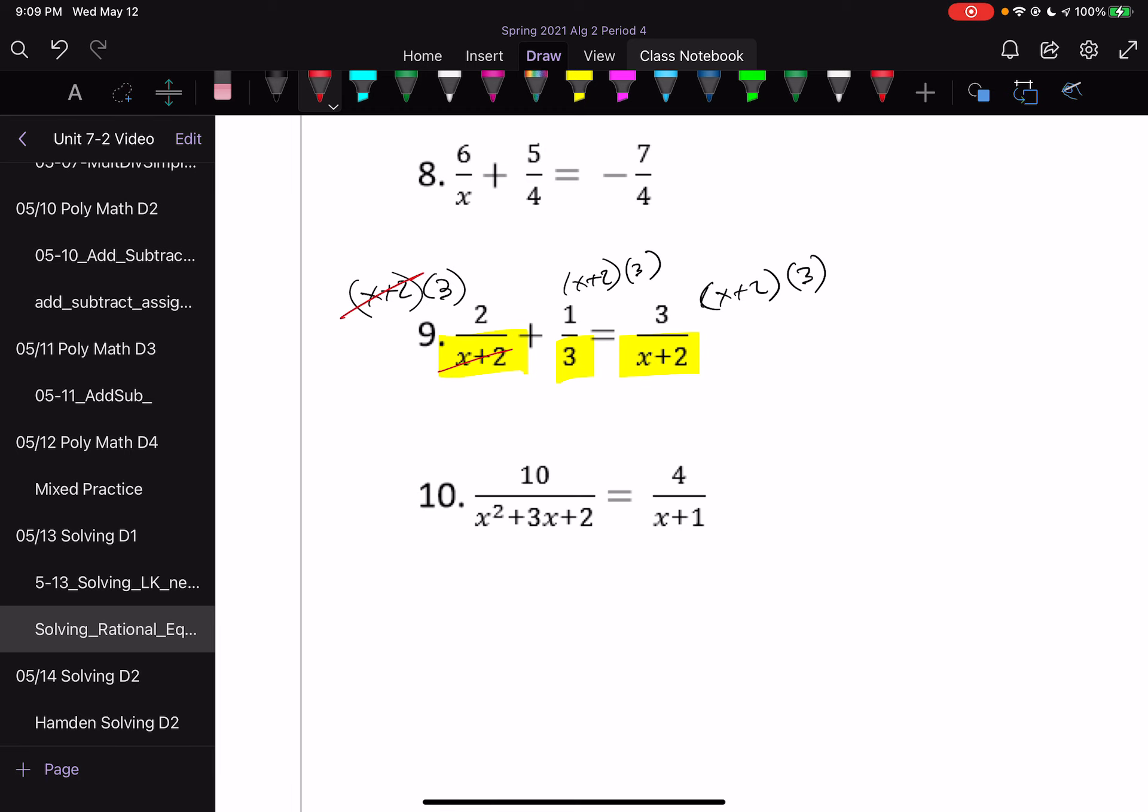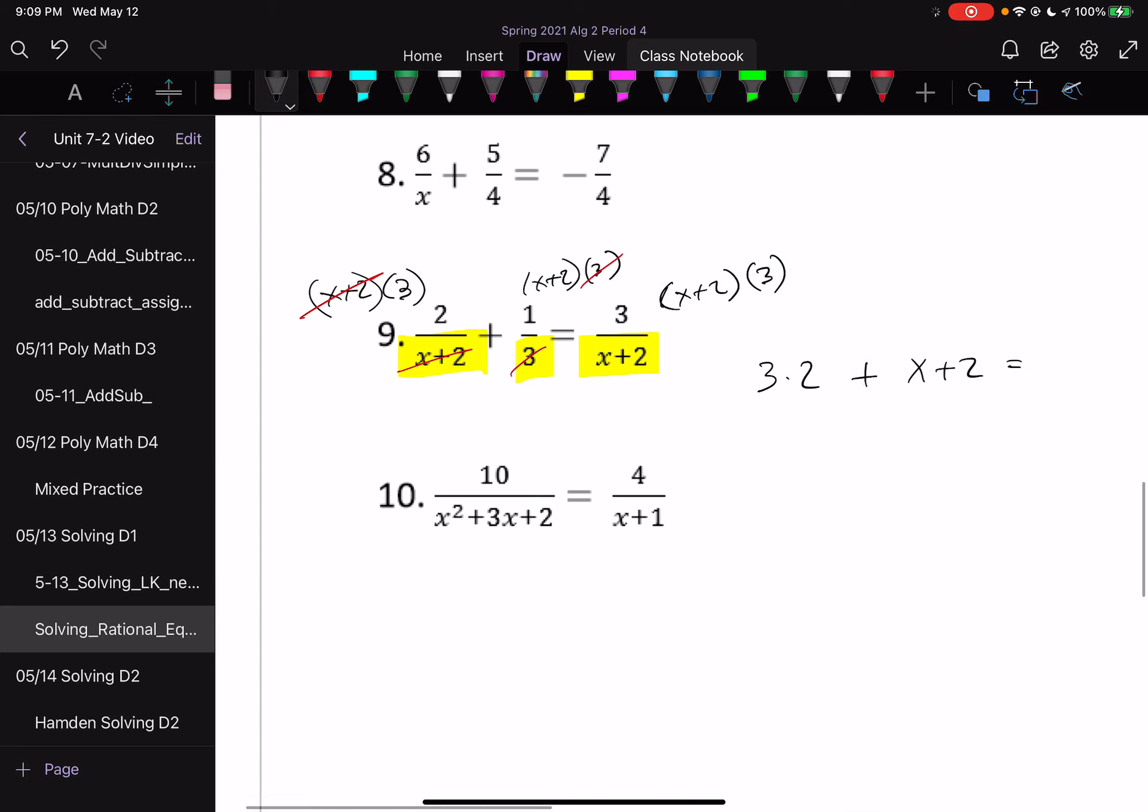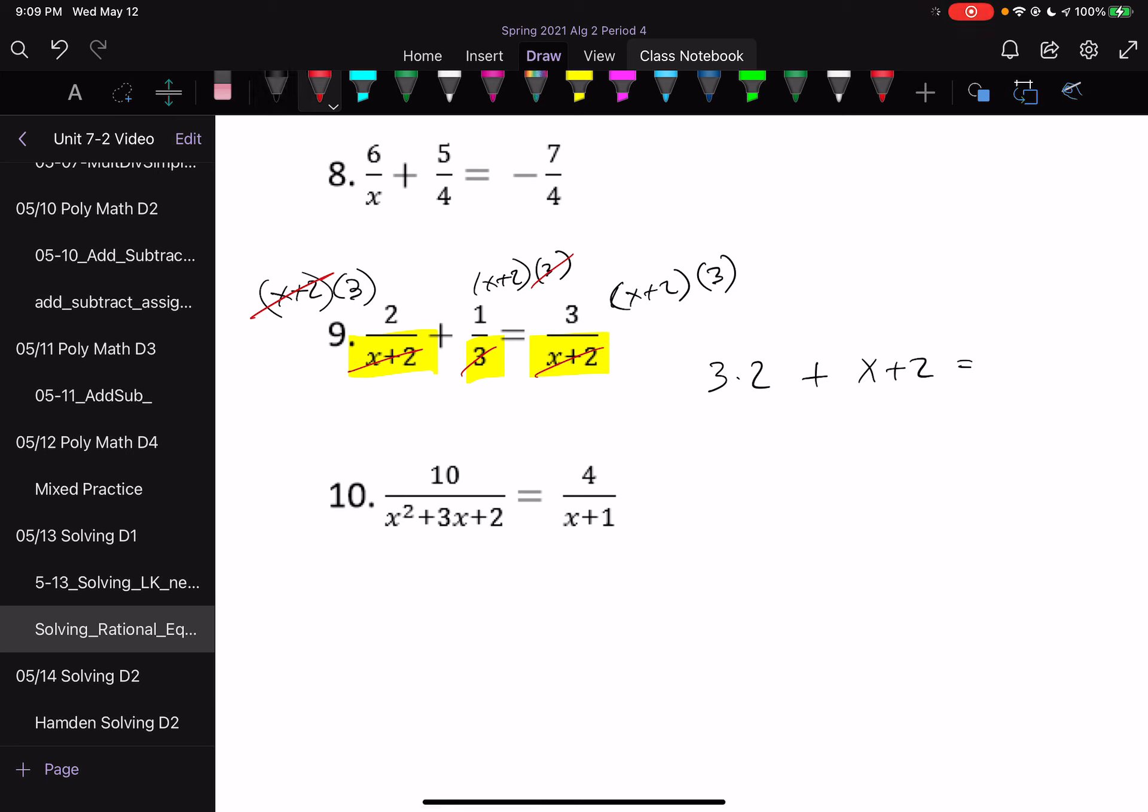We have x plus 2, we have x plus 2. We only are left with 3 times 2 for our first term. For the next term, the 3s would cancel, so I'd have 1 times x plus 2, or just x plus 2. For the last one, I'd have x plus 2s cancel, so I'd have 3 times 3.